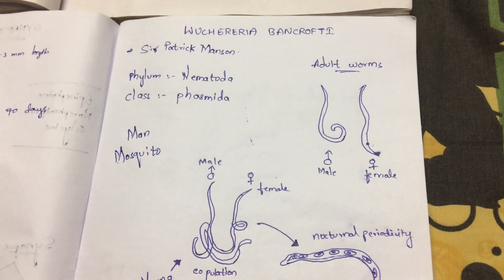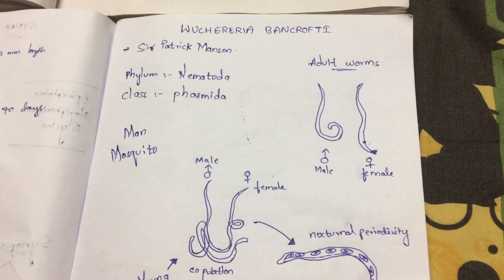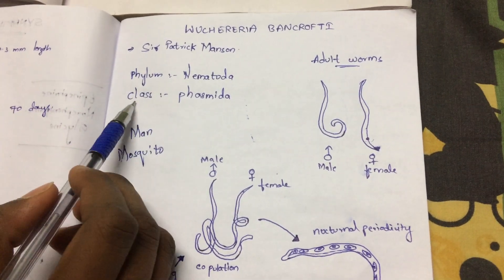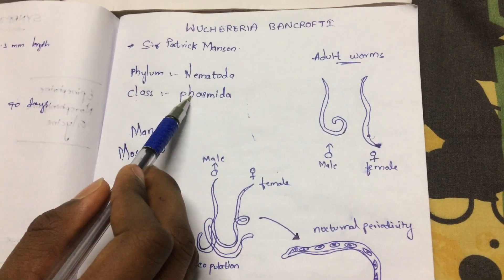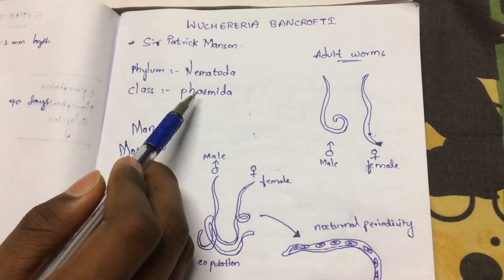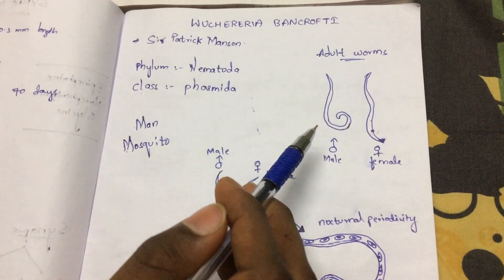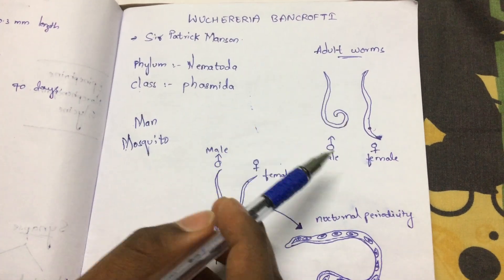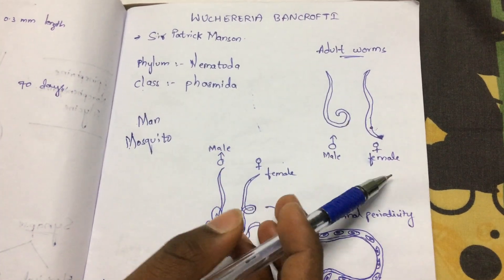Wuchereria bancrofti mainly belongs to the phylum Nematoda and mainly belongs to the class Phasmida, and it mainly causes disease by the two adult worms — male and female.